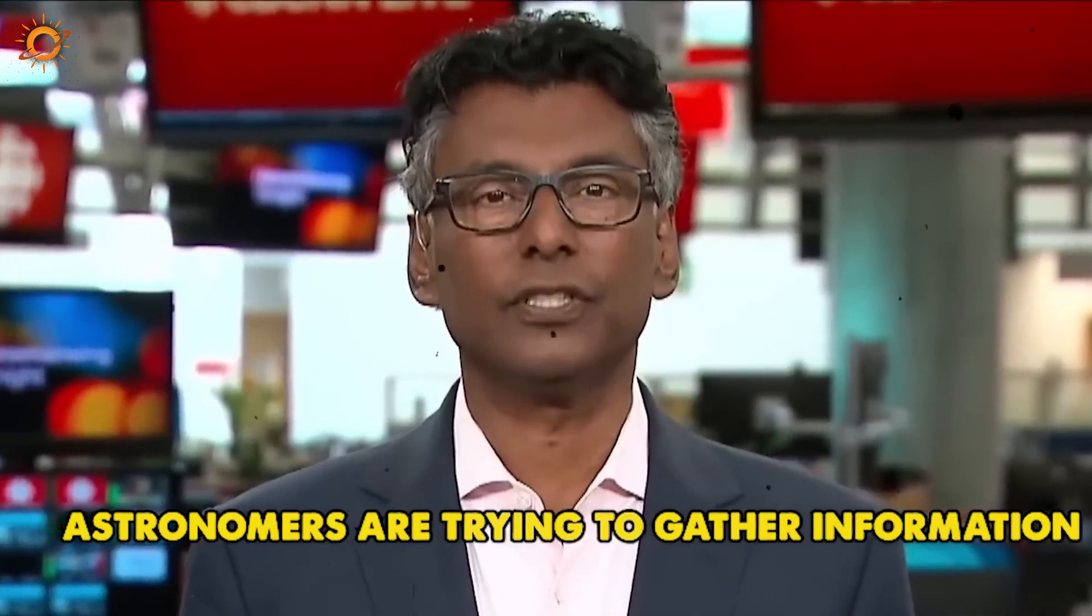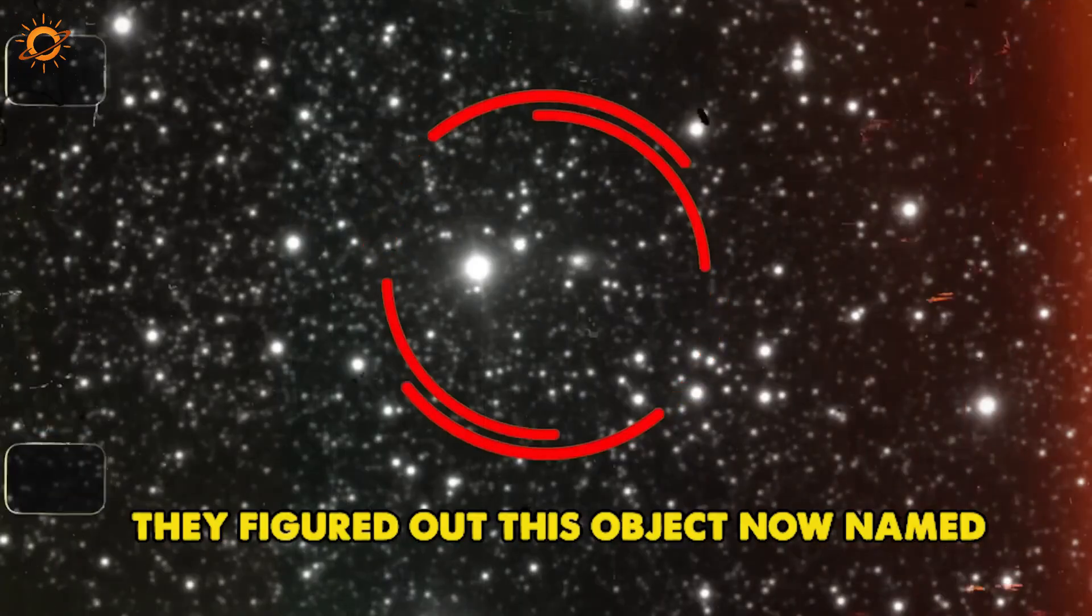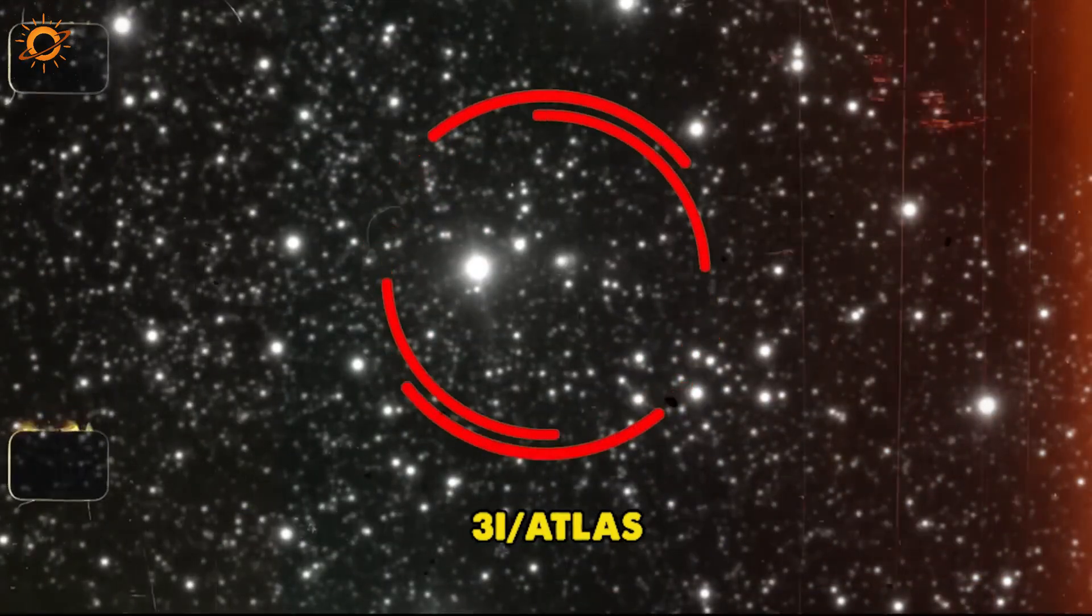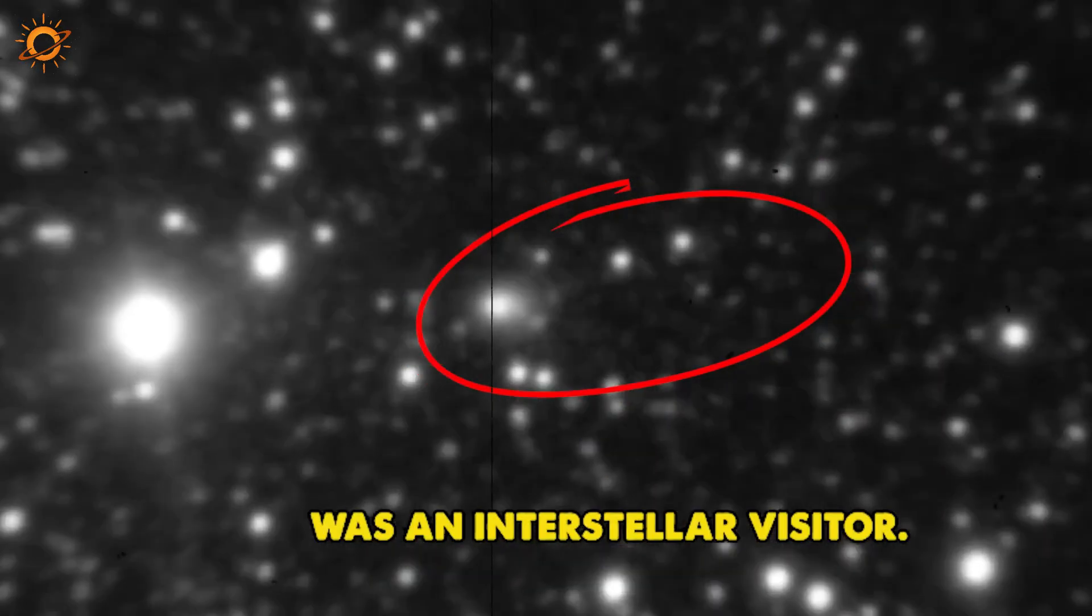Astronomers are trying to gather information about a comet passing Earth. They figured out this object, now named Three-Eye Atlas, was an interstellar visitor.